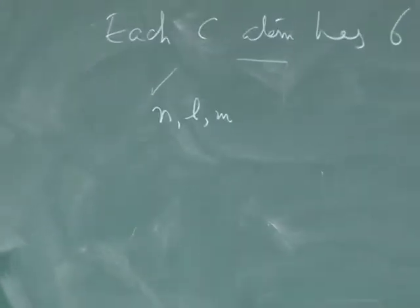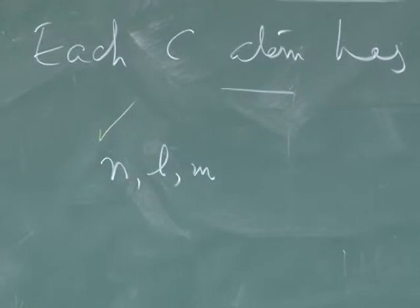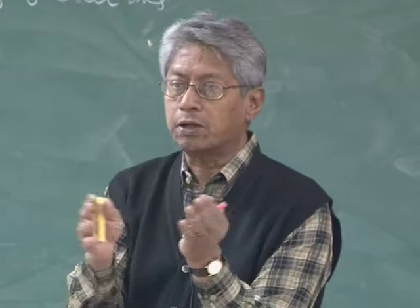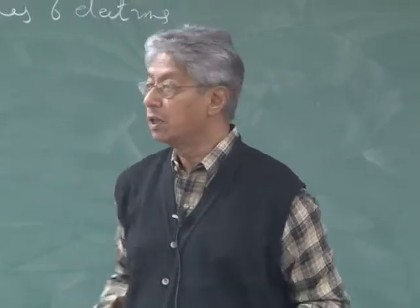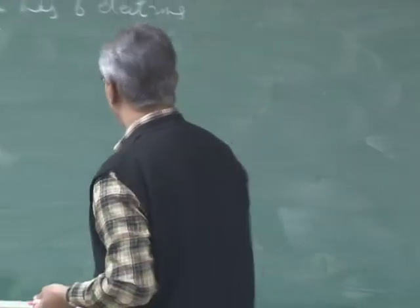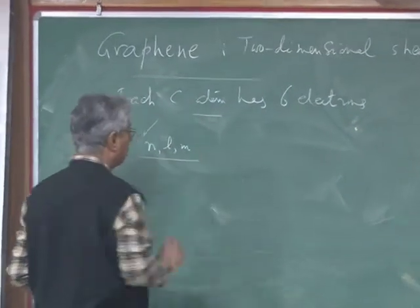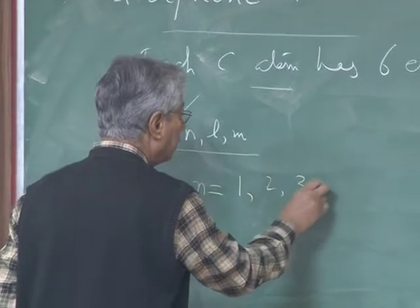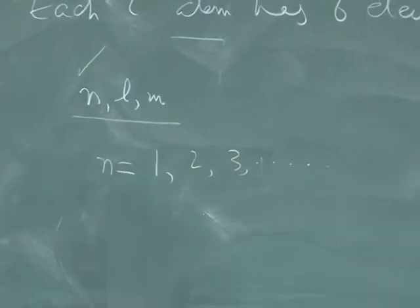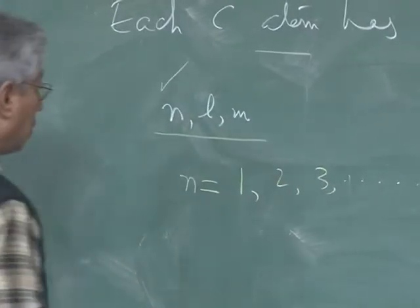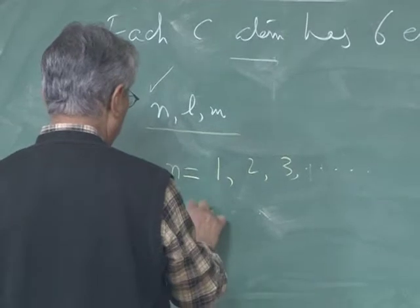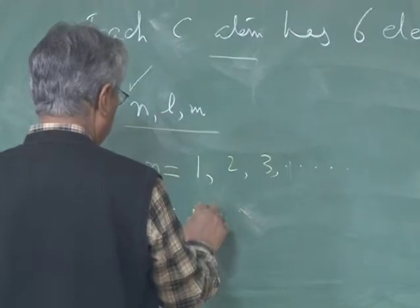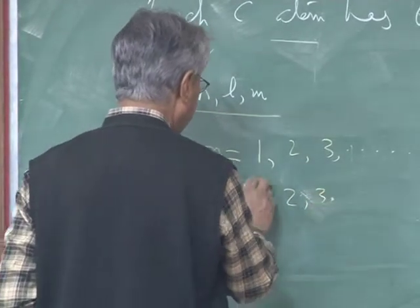This degeneracy is lifted when you bring in other electrons, because with just one nucleus and multiple electrons, there are electron-electron interactions, so L and M all come in. The classification is still based on these three quantum numbers. N is an integer going from 1, 2, 3, etc. L is also an integer; L can be 0. If L is equal to 0, everything is spherically symmetric and M must equal 0 — this state is called an S-wave state.